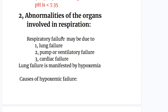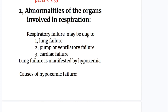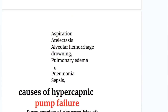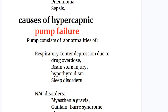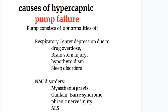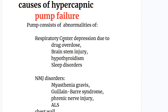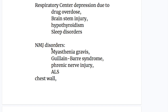Abnormalities of the organs involved in respiration include lung failure, pump failure or ventilatory failure, and cardiac failure. Lung failure is manifested by hypoxemia. Causes of hypercapnic pump failure: the pump consists of the respiratory center, neuromuscular junction, chest wall, and cardiac function. Respiratory center depression may be due to drug overdose, brain stem injury, head injury, hypothyroidism, and sleep disorders. Neuromuscular junction disorders include myasthenia gravis, Guillain-Barré syndrome, phrenic nerve injury, and ALS, all of which may cause respiratory failure.